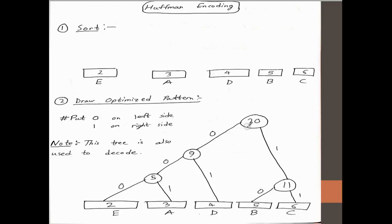0, 0, and then we go to left 0, so 3 zeros. This is the path for E, this is E. So 0, 0, and 0.